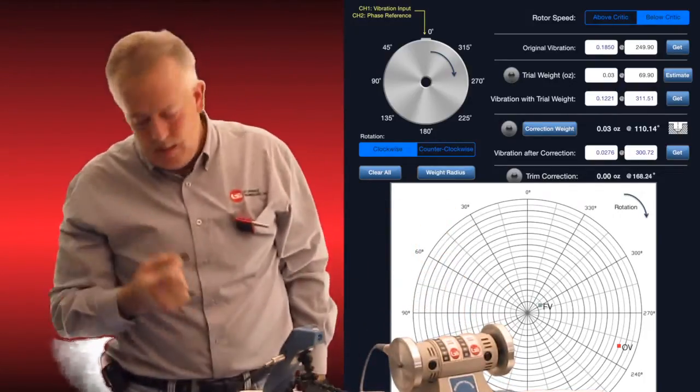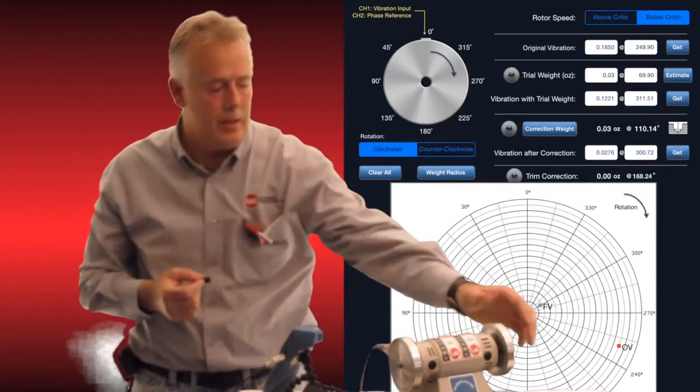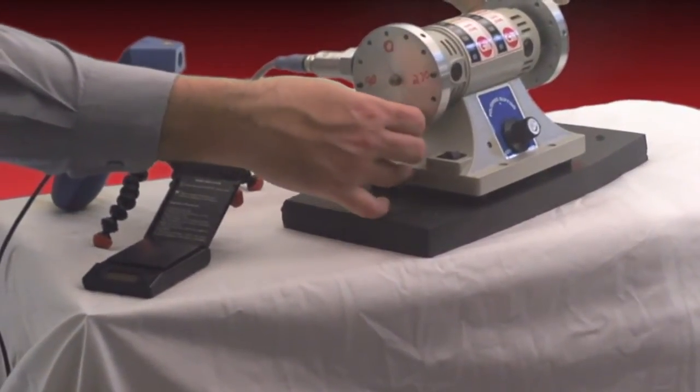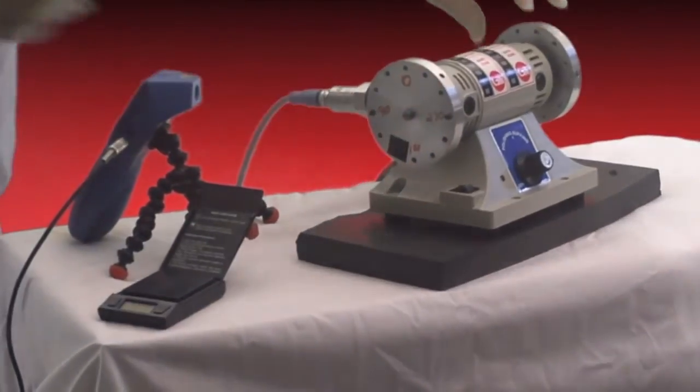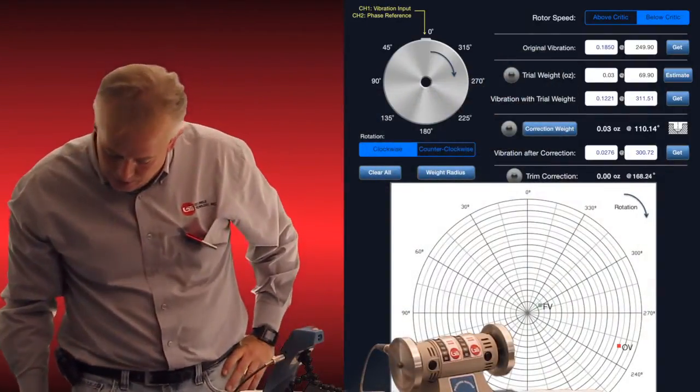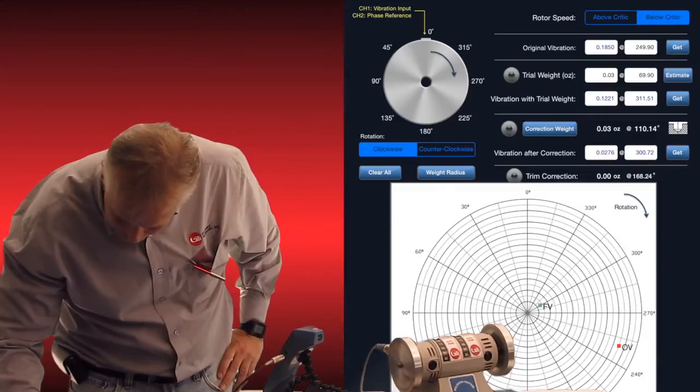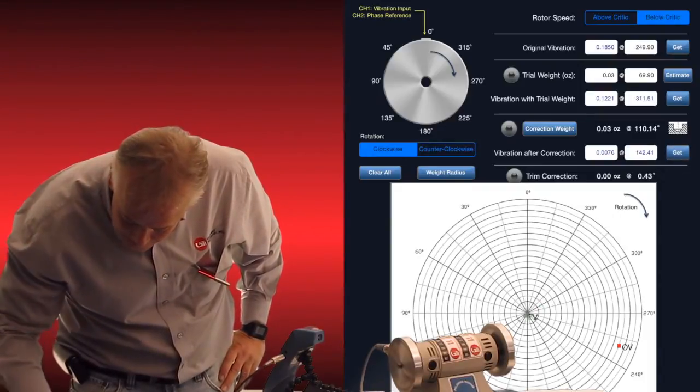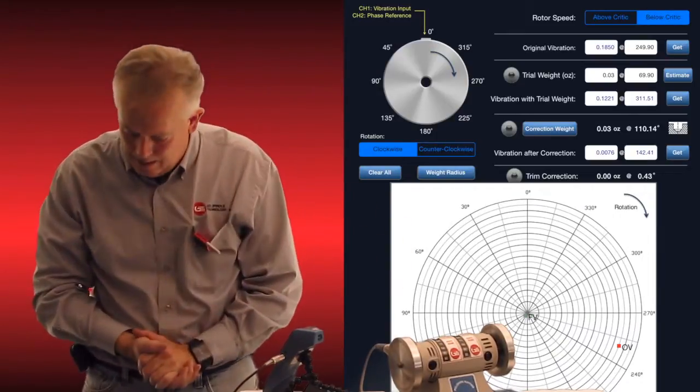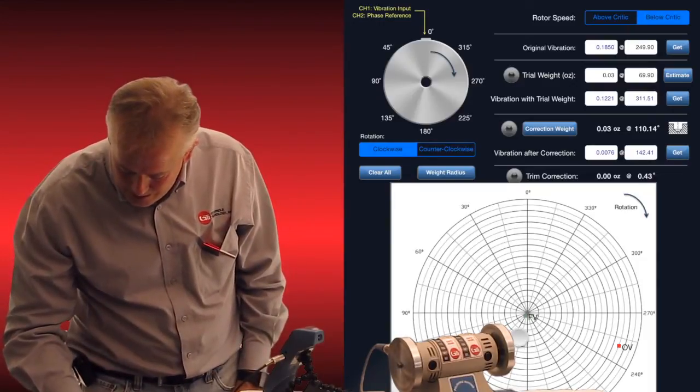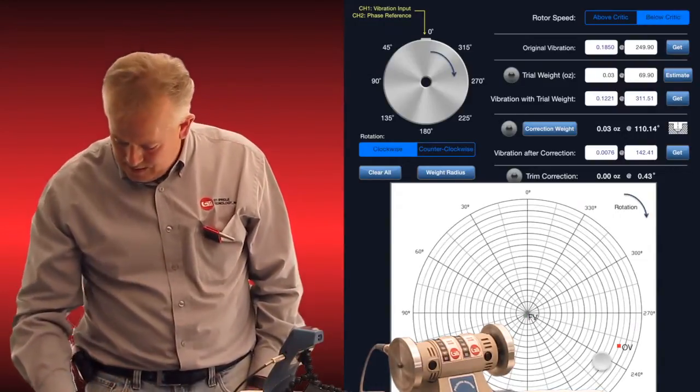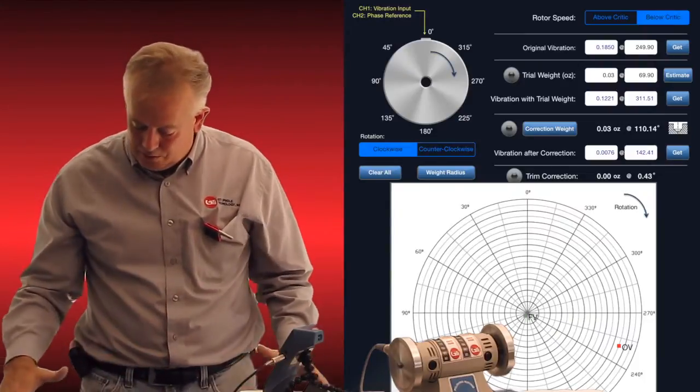We're going to put a small piece of electric tape at 168 degrees, exactly where it's telling us. So there's our 180. So 168 is just to one side of that 180. Now that doesn't weigh much, but it's enough to make a correction. And we're going to run again. And as you can see, I'm going to hit the get button again, vibration after correction. And now we're at 0.0076, which is far below any ISO spec. You can see my final vibration here in the middle of my report is dead center of the target. This red mark over here is our original vibration, and everything looks good.